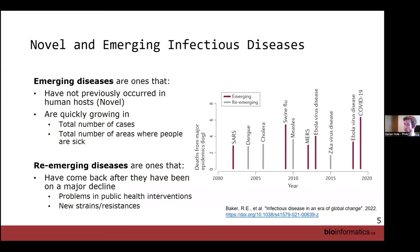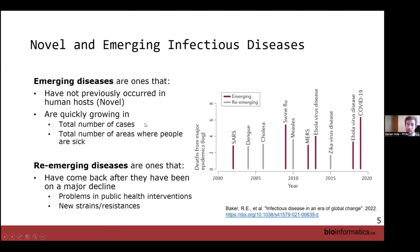To start: what are novel and emerging infectious diseases? An emerging infectious disease is one that has not occurred in human hosts previously — so it's novel — or is quickly growing in the total number of cases or the total number of areas where people are sick. This is in slight contrast to re-emerging diseases, which are ones that have come back after a major decline, due to reasons like problems in public health interventions, lack of vaccination, or a new strain or resistance — a good example being TB.